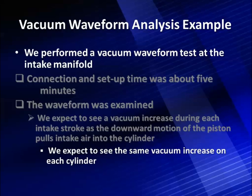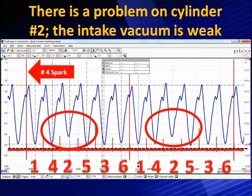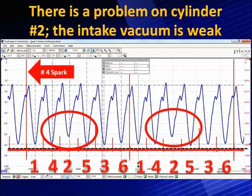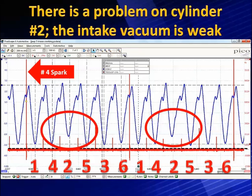Let's look at that signal. Here's our testing — we've been cranking for about 15 seconds and captured this pattern. We're analyzing it now and there is a problem. On cylinder number two, with the firing order going across the bottom, the intake vacuum is weak. What could make intake vacuum weak? A number of things — we're going to show you how to go into an analysis and do some very detailed diagnostics.